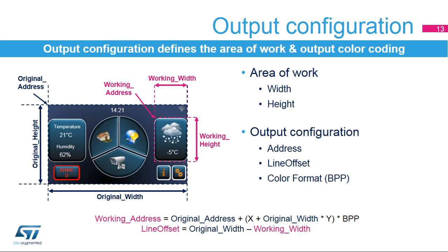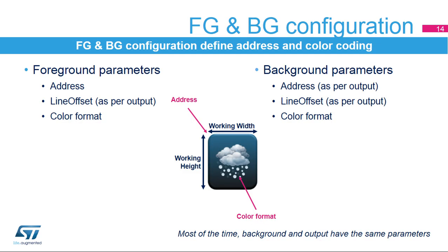The output configuration defines the working area for the Chrom-ART operation. The address and line offset parameters are used to select which sub-area of the output is concerned. The background and foreground layers have their own configuration for address, line offset, and color format.